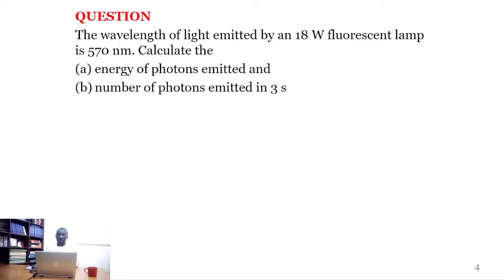The question says the wavelength of light emitted by an 18 watts fluorescent lamp is 570 nanometers. Calculate the energy of photons emitted and the number of photons emitted in three seconds.